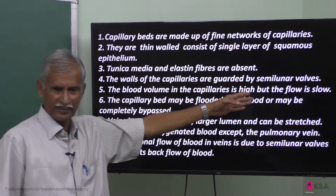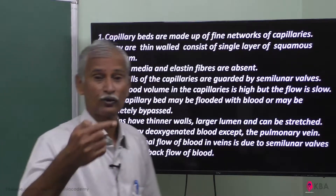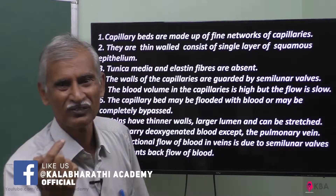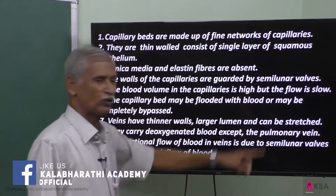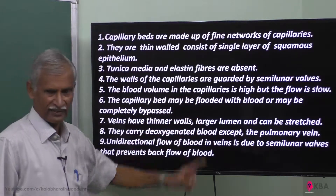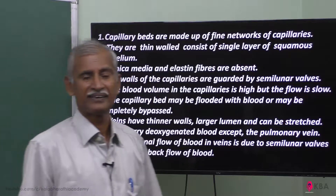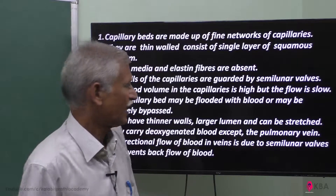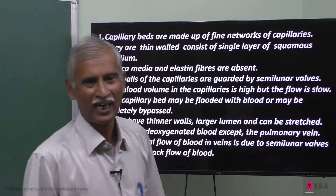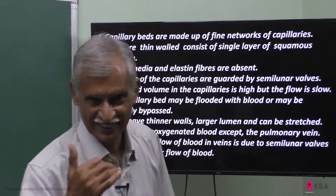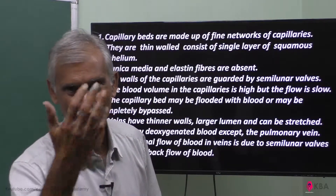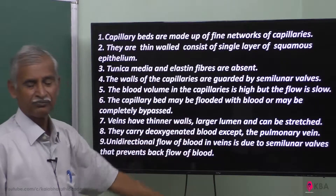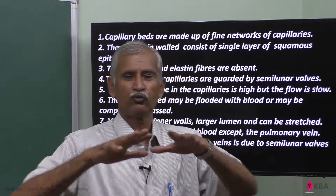The walls of the capillaries are guarded by semilunar valves. In the capillary wall, there are semilunar valves. The blood volume in the capillary is very high — higher than the arteriole. The flow is very slow, which allows correct materials exchange between tissue and blood.